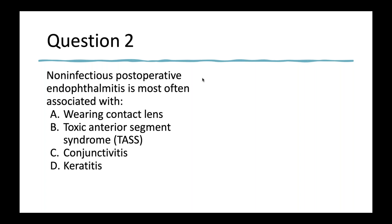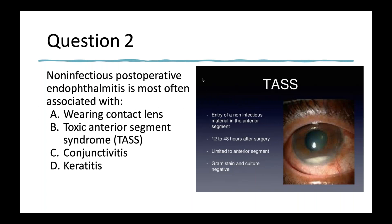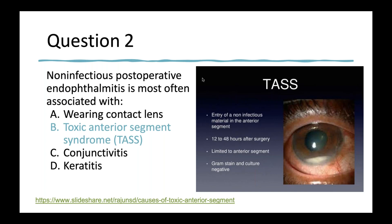Question two: Non-infectious post-operative endophthalmitis is most often associated with A, wearing contact lenses; B, toxic anterior segment syndrome; C, conjunctivitis; or D, keratitis. For everyone who put B, toxic anterior segment syndrome — you are correct. This is when you have a non-infectious material in the anterior segment of the eye. It can happen about 12 to 48 hours after surgery, is limited to the anterior segment, and gram stains are negative.